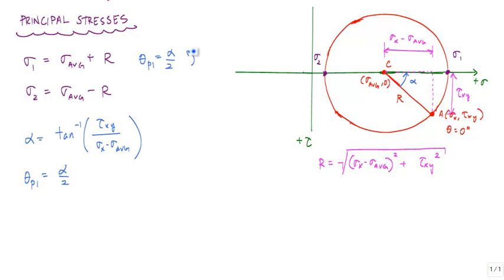We can also calculate the angle associated with sigma 2 from, again, this is 0 degrees. And that angle would go right here. And I'll call that beta. And this beta is just 180 minus alpha in Mohr's circle, which I can calculate theta p2 as just beta over 2. In order for me to get to sigma 2 from theta equals 0 degrees, I've got to go clockwise. And that means this theta p2 is equal to beta over 2 clockwise.